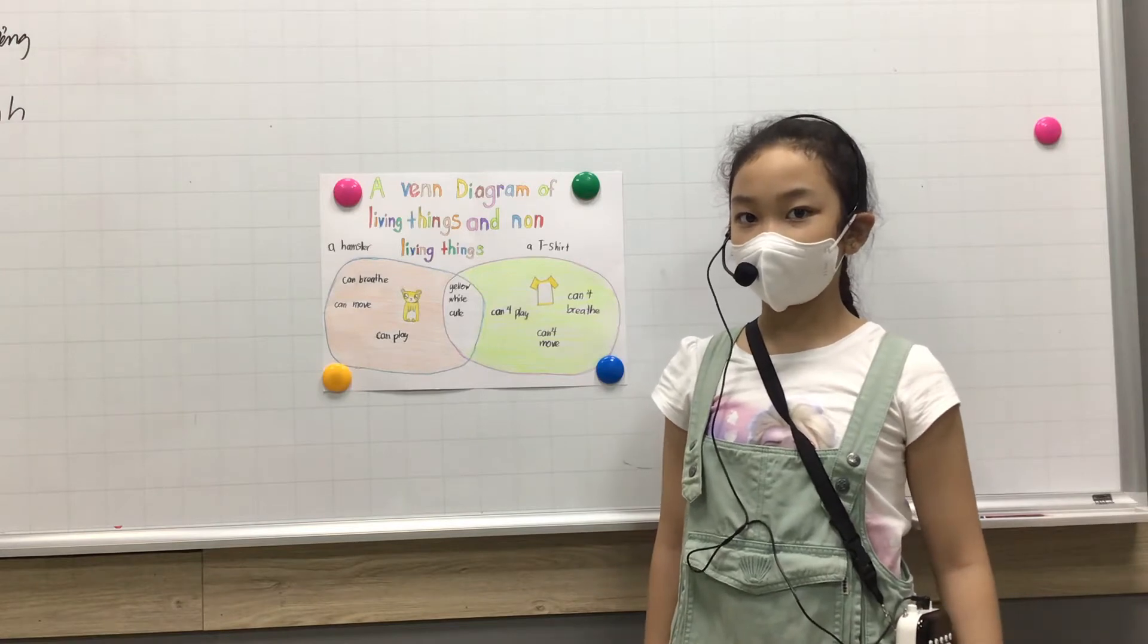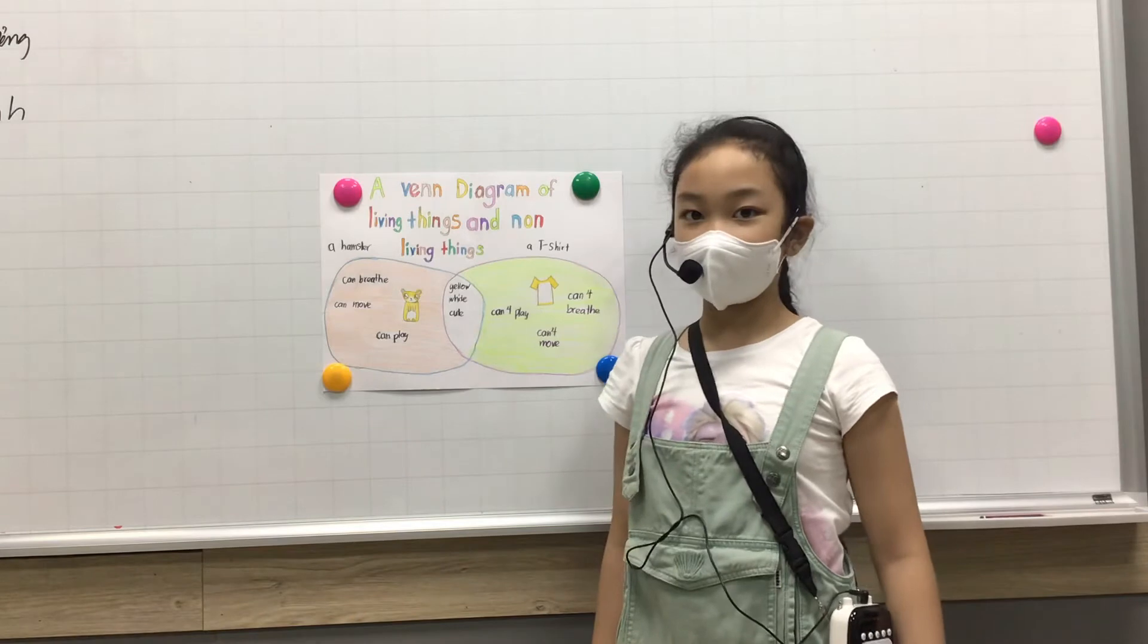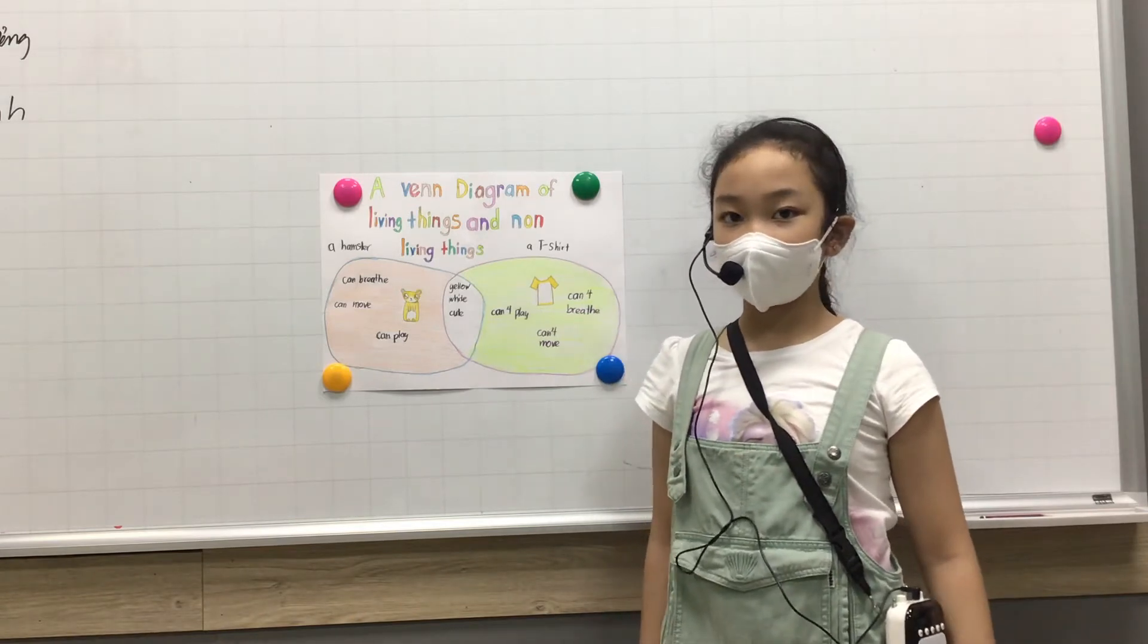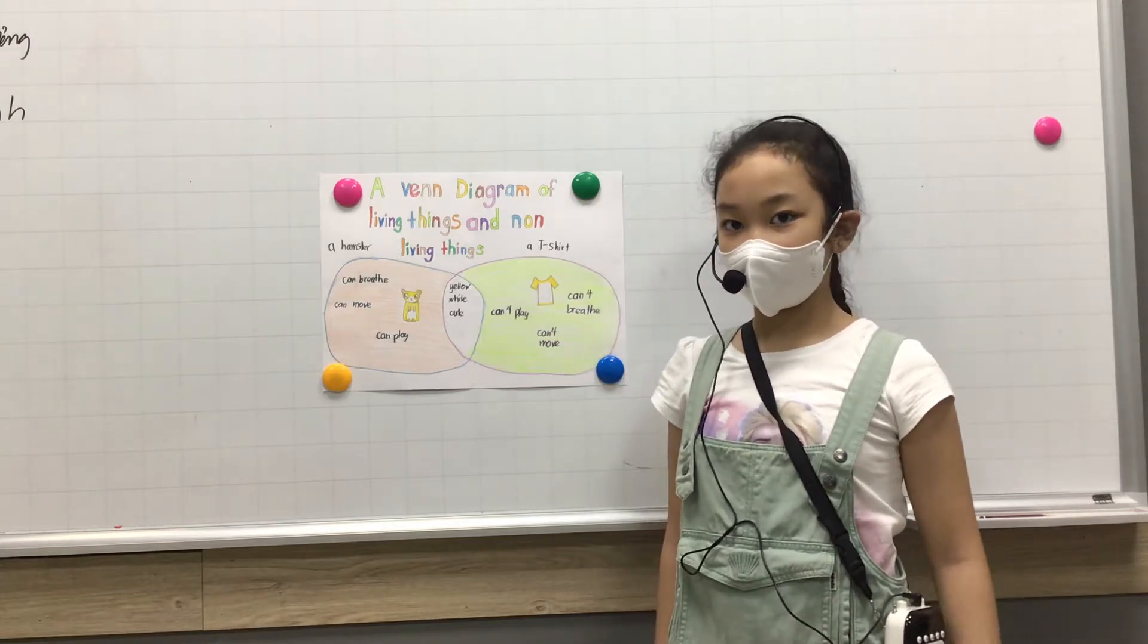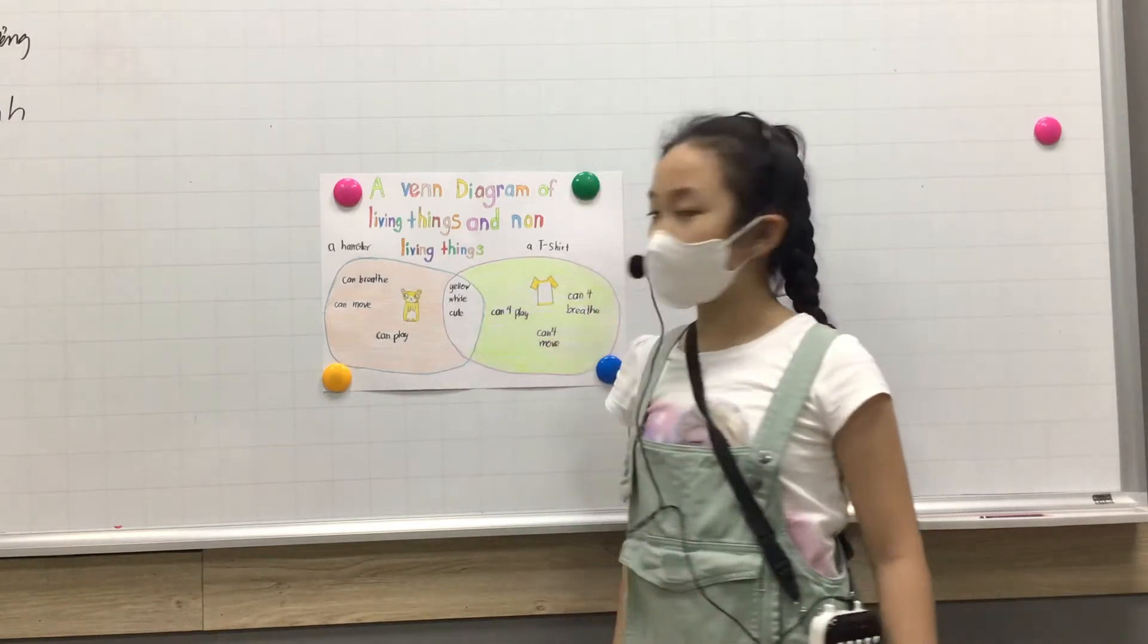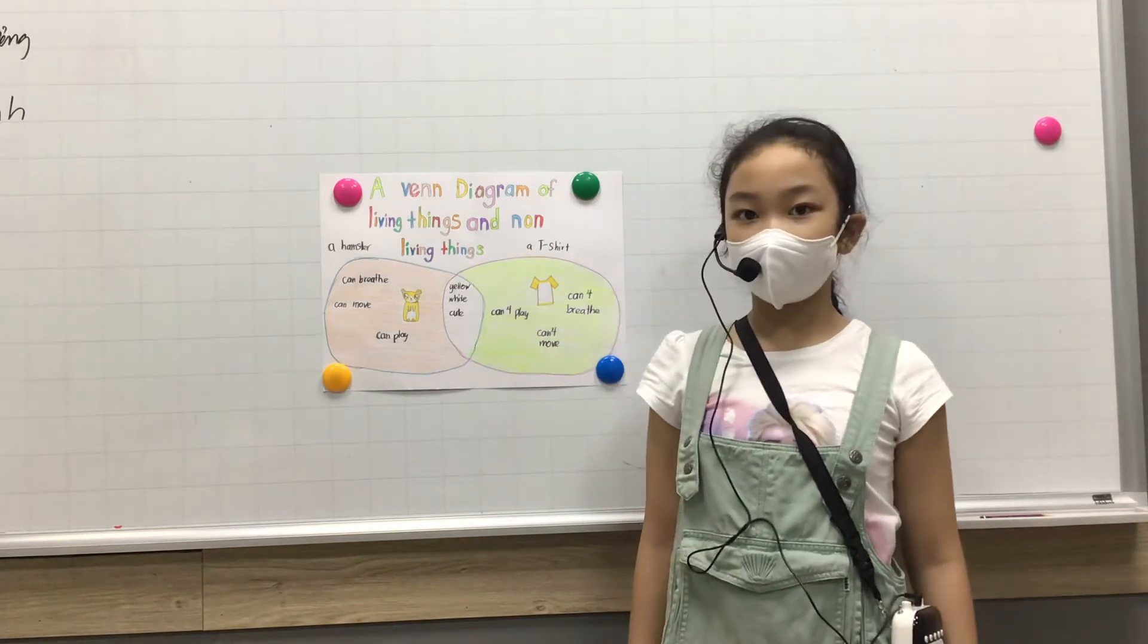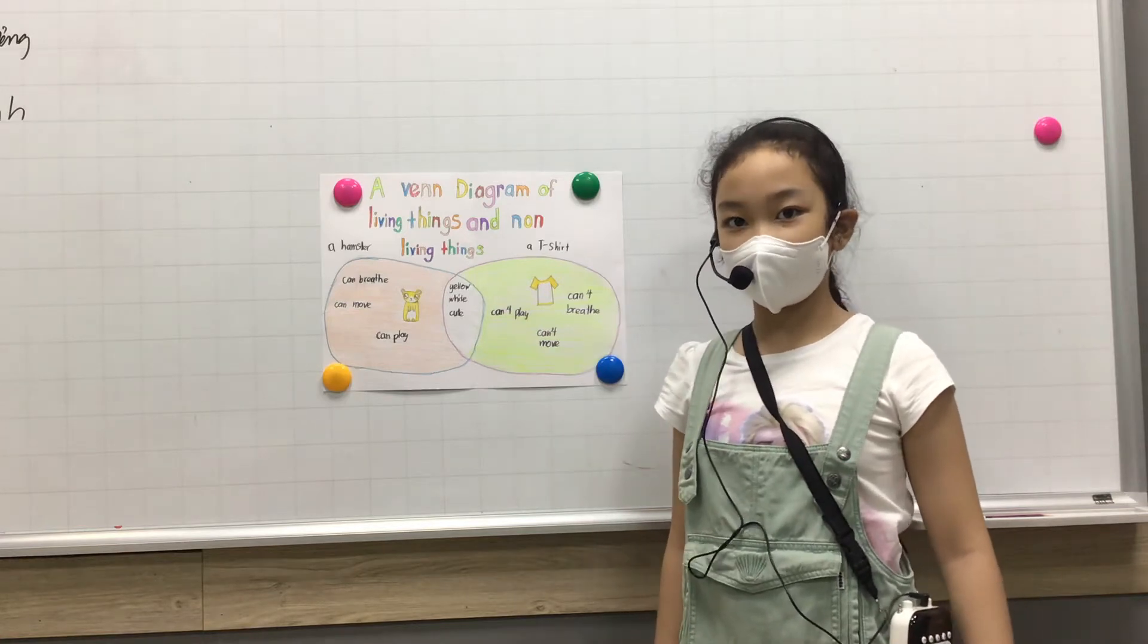Venn diagram has the differences and the similarities between living things and non-living things. The living thing is a hamster and the non-living thing is a t-shirt. Now I'm going to talk about the differences between the hamster and the t-shirt.